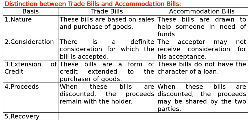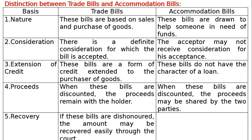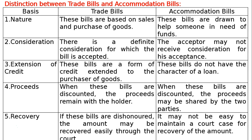Fifth basis is Recovery. In case of trade bills, if these bills are not honored, the amount may be recovered easily through the court. In case of accommodation bills, it may not be easy to maintain a court case for recovery of the amount.